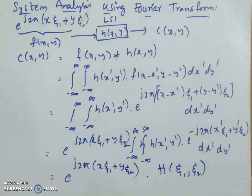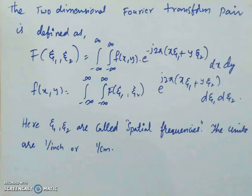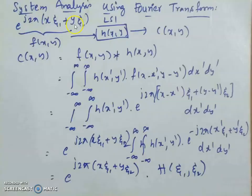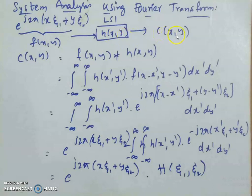Why are we interested in the complex sinusoidal as the basis function? The kernel considered in the Fourier transform definition is a complex exponential. The reason we take the complex exponential as the basis function is that it is an eigenfunction of an LSI (linear shift-invariant) system. Let us look at the proof.